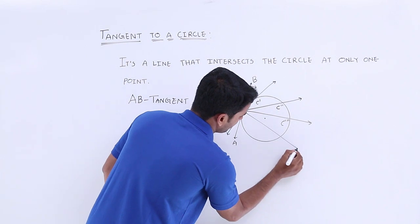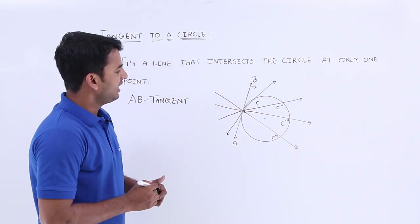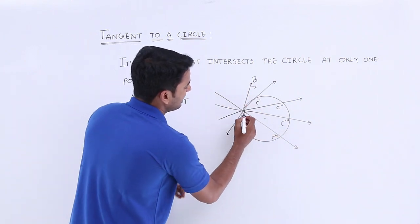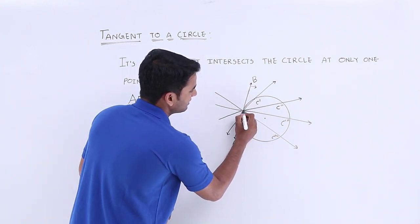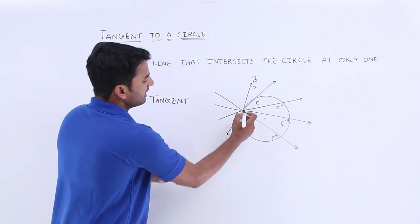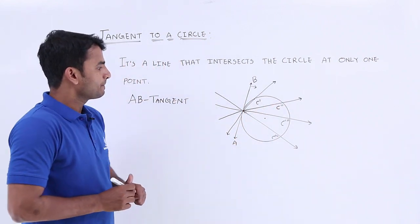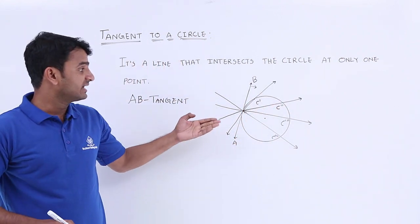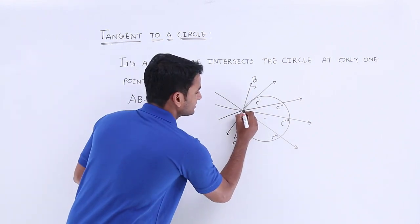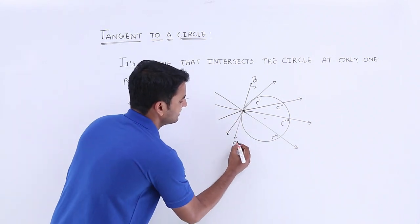If you observe, while tilting this line every time the distance between the contact points C, C dash, and C double dash is increasing. From this we can say that we cannot draw more than one tangent from a point on a circle — at this point we can draw only one tangent, that is AB.